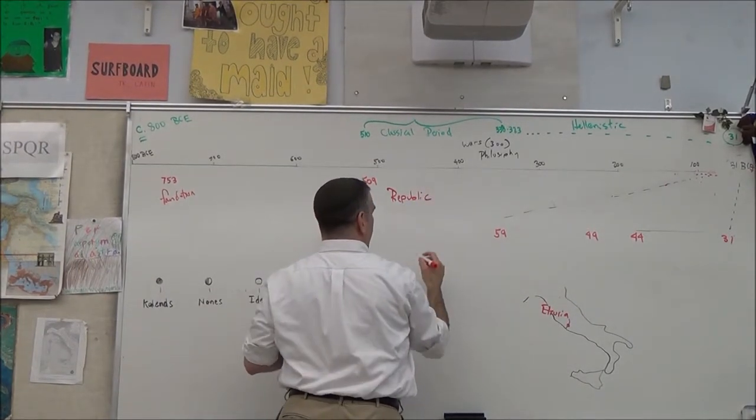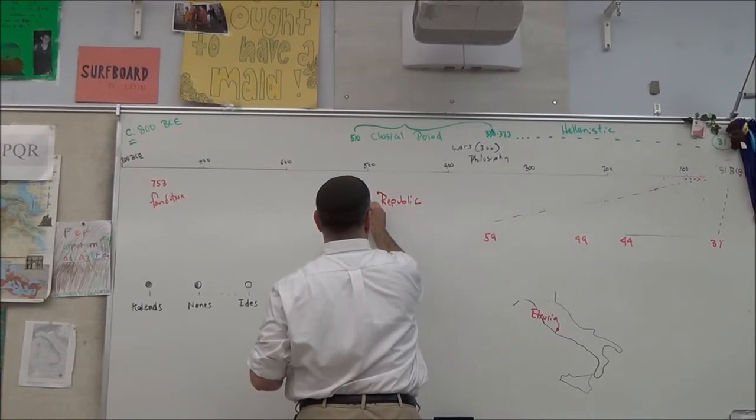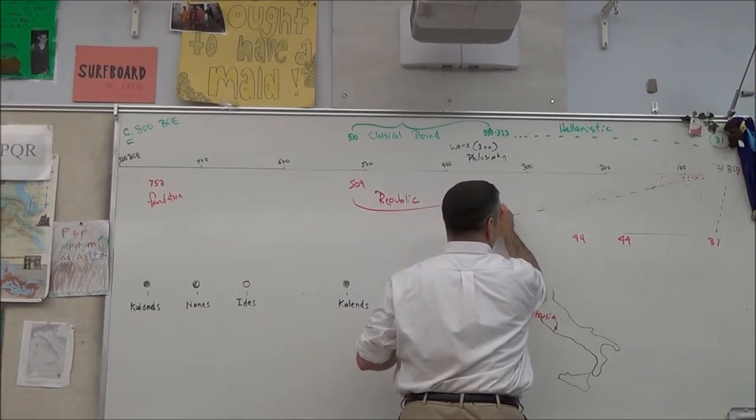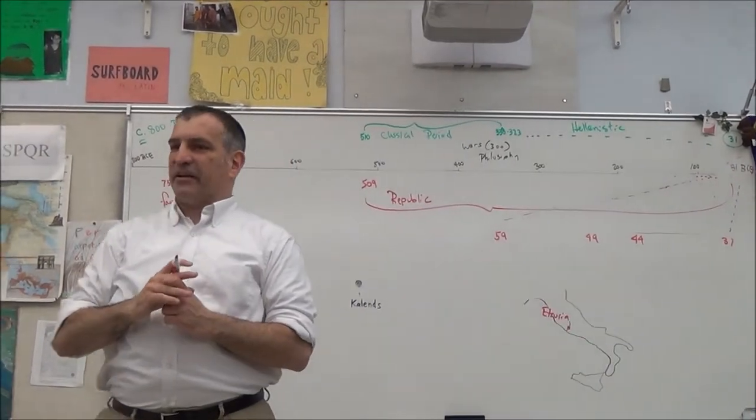Which is to say, ruled by a senate. And so then, the Roman Republican period lasts from 509 BC, and we're going to use the same date that the Hellenistic period ends with, and that's say 31 BC.